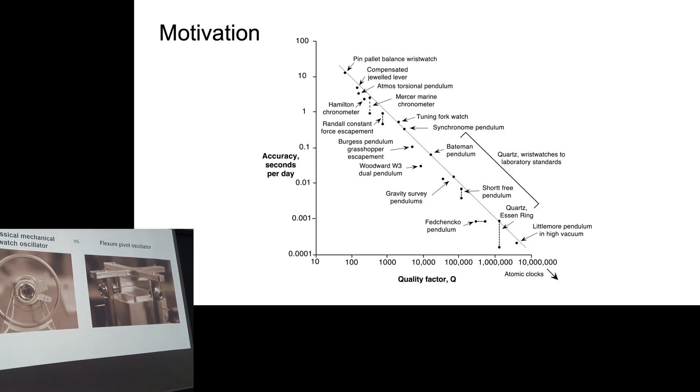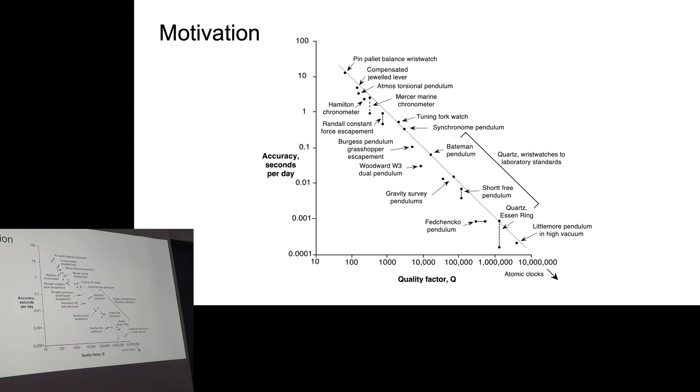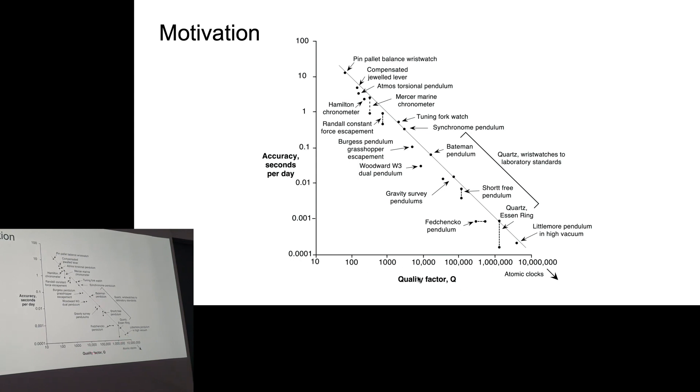Now, why do I want to do this? Here is some data that was gathered on some oscillators. And you don't have to look at it in detail, but basically you see that there is a correlation between accuracy of the timekeeper and the efficiency of the oscillator, which is expressed in terms of quality factor. And we see that if the quality factor is higher, the accuracy is better for the timekeeper.